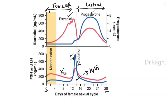During the follicular phase, follicles develop, granulosa cells proliferate, and they begin producing estradiol (estrogen). The level of estrogen slowly and steadily increases throughout the follicular phase, reaching a peak a few days prior to ovulation. There is no significant change in progesterone levels during this phase.